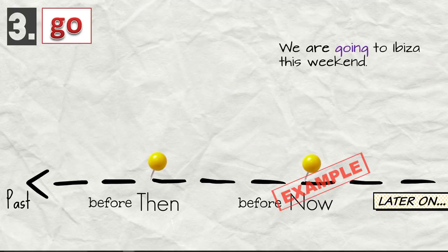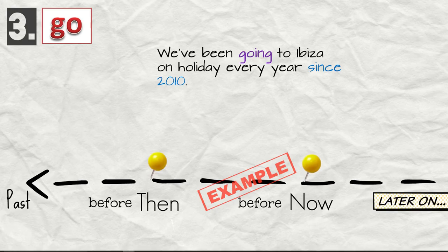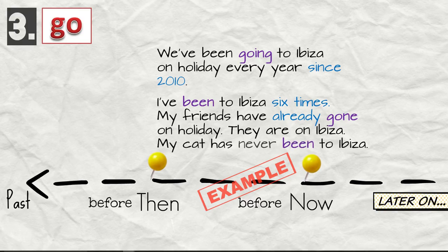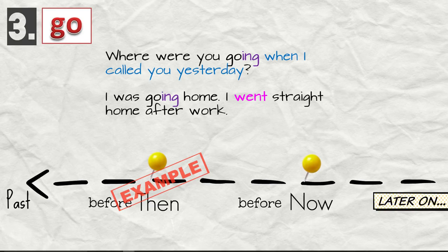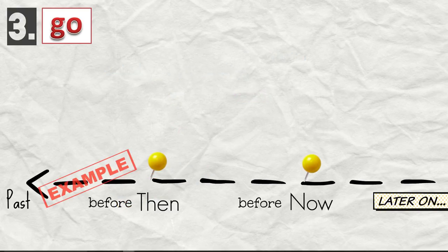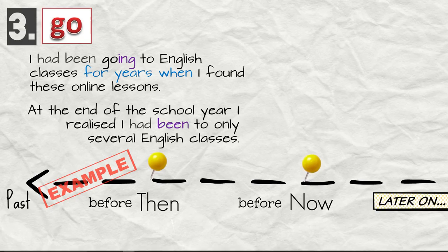Let's have a look at the examples. We are going to Ibiza this weekend. I want to go on holiday. I don't often go on holiday. My cat never goes on holiday. We've been going to Ibiza on holiday every year since 2010. I've been to Ibiza six times. My friends have already gone on holiday. They are on Ibiza. My cat has never been to Ibiza. Where were you going when I called you yesterday? I was going home. I went straight home after work. You didn't go to the English class? Yes, I did. I had been going to English classes for years when I found these online lessons. At the end of the school year I realized I had been to only several English classes.